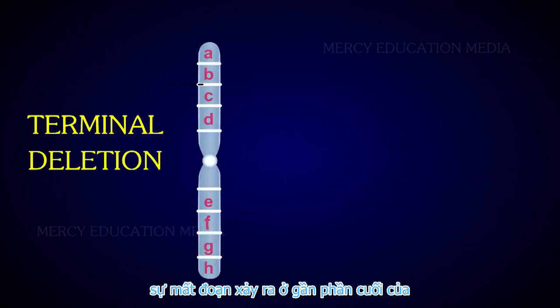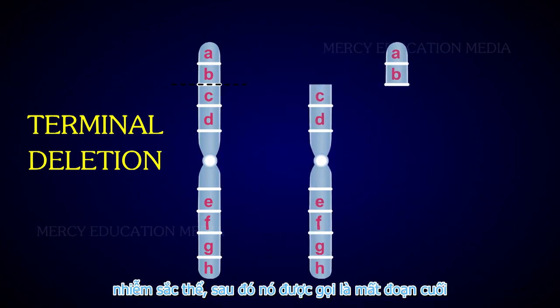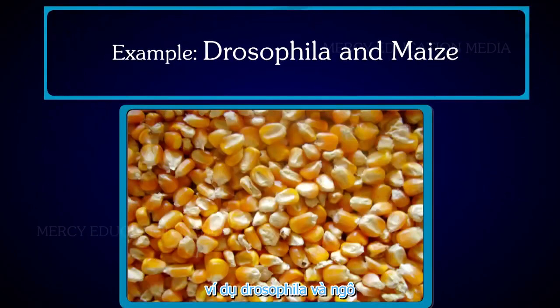When the deletion occurs near the end of the chromosome, then it is called terminal deletion. For example, Drosophila and maize.